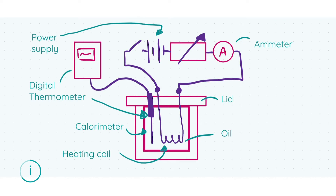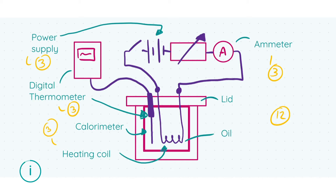Now let's take you through the marks and highlight the important terms. There are 12 marks for this question. You get three marks for including the heating coil, three marks for including your digital thermometer, three marks for drawing in your ammeter — and it must be in series, because drawing it in parallel won't get you marks. Then three more marks for a power supply or battery. The calorimeter, oil, and lid are also important to draw in to fully show the experiment.